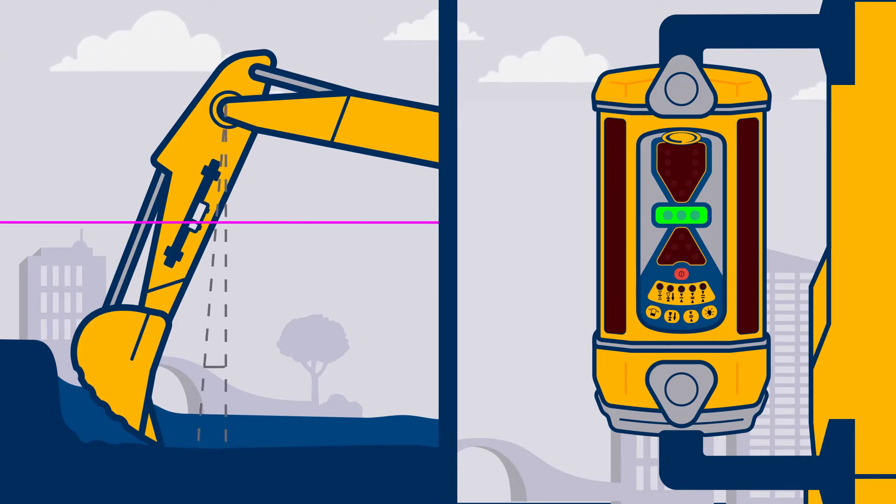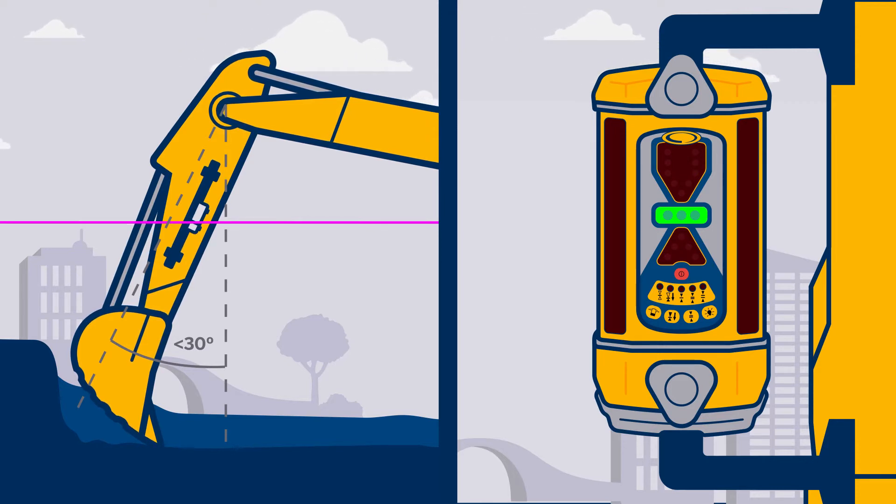The maximum compensation angle is between 10 degrees and 30 degrees and depends on the machine size and system setup. The closer the receiver is to the ground, the wider the compensation angle.